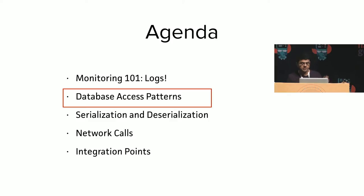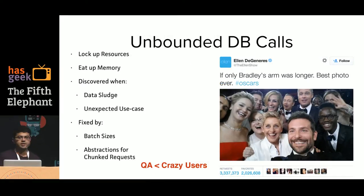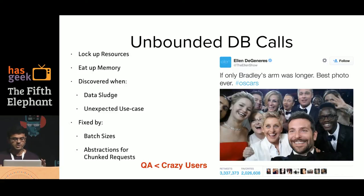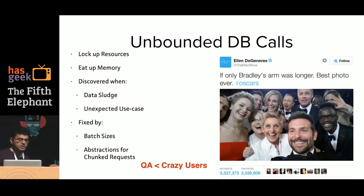Next up is database access patterns. The big problem which goes undetected — and should not go undetected — is unbounded DB calls. These are calls where you don't have a bound on the size of the response you are expecting, or you don't have a bound on the number of requests you will make in a certain call. No matter how hard you try, your dev and QA environments are never going to be the same as your production environment. Real-world usage is really hard to predict and we rarely think of the effects of data piling up over time. The way to counter this is to use batch sizes when you make your DB request abstractions. Check that your DB clients provide default batch sizes and make sure your requests have batch sizes.